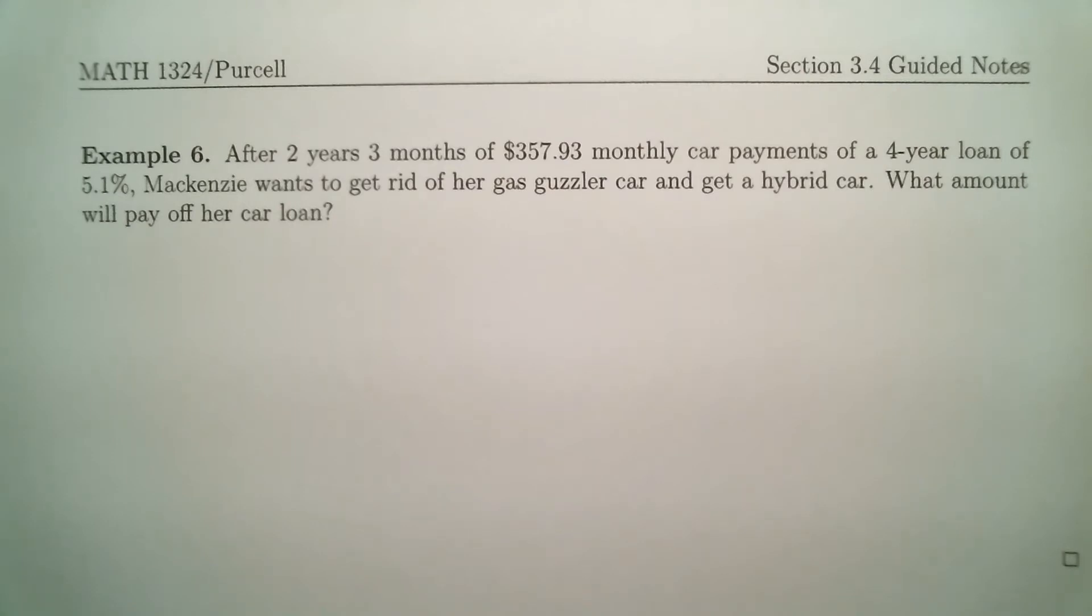What's going on here is McKenzie has this gas guzzler car. She's been making payments on the car. The car loan was a four-year car loan. She's made the payments for two years and three months. Now she wants to get rid of this car. She has to pay off the loan. So we're trying to figure out how much she still owes on the car.